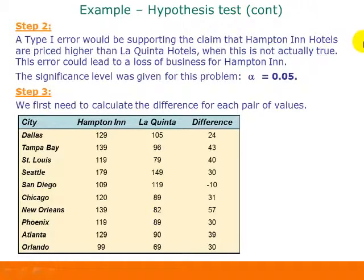Step 2: A type I error would be supporting the claim that Hampton Inn hotels are priced higher than La Quinta hotels when this is not actually true, which could potentially lead to a loss of business for Hampton Inn. The significance level was given as alpha equals 0.05.